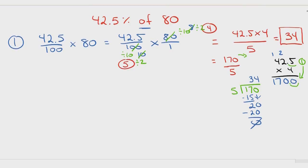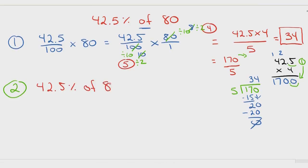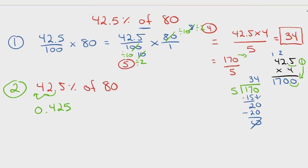And that is the fraction way. Personally, I don't like the fraction way — I think it's just too much work. I prefer the decimal way. Way number 2. We have the same problem: 42.5% of 80. What you're going to do is change the 42.5% to a decimal. A percent is out of 100, so all we're going to do is move the decimal two places to the left to change it into a decimal. This turns into 0.425. It's always two spaces when you're changing a percent to a decimal. When you're changing a decimal to a percent, it's two places to the right. It's always two spaces because you're dividing or multiplying by 100.